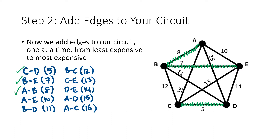Next I have the edge from A to E. Let's think about that — I'll shade it in orange so we can see what's going to happen. Is that something we can use as part of our Hamiltonian circuit? Not really, because that would give us a circuit that only involves vertices A, B, and E. For a Hamiltonian circuit we want a circuit that visits every vertex before returning to the starting point. So we can't use that edge from A to E, even though it's the next cheapest. I'm going to put an X next to it.